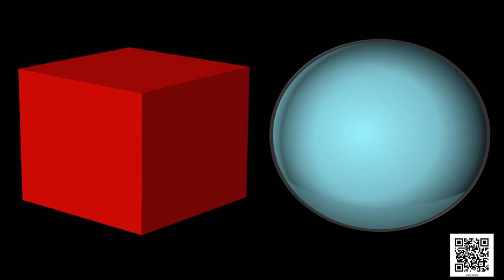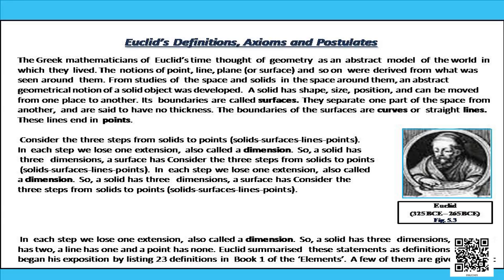It is said that there are three steps from solids to points: solids, surfaces, lines, points. In each step, we lose one extension, also called a dimension. So a solid has three dimensions, a surface has two, a line has one and a point has none.